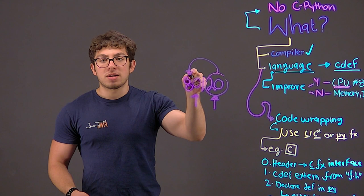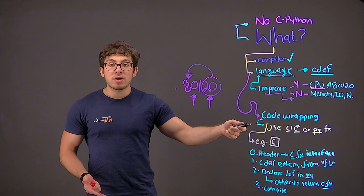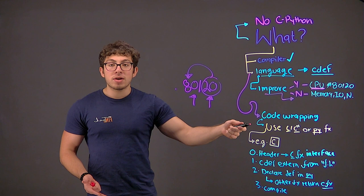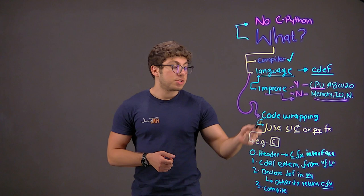Scython will not improve your Python's performance code when you are dealing with memory operations, input and output operations, and network operations. Because C and Python have similar time dealing with those operations.